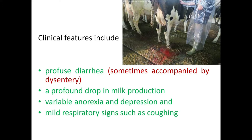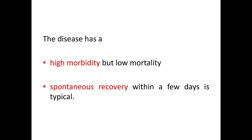The clinical features include profuse diarrhea, sometimes accompanied by dysentery — that is bloody discharge — a profound drop in milk production, variable anorexia and depression, and mild respiratory signs such as coughing. The disease has a high morbidity but low mortality, and spontaneous recovery within a few days is typical.